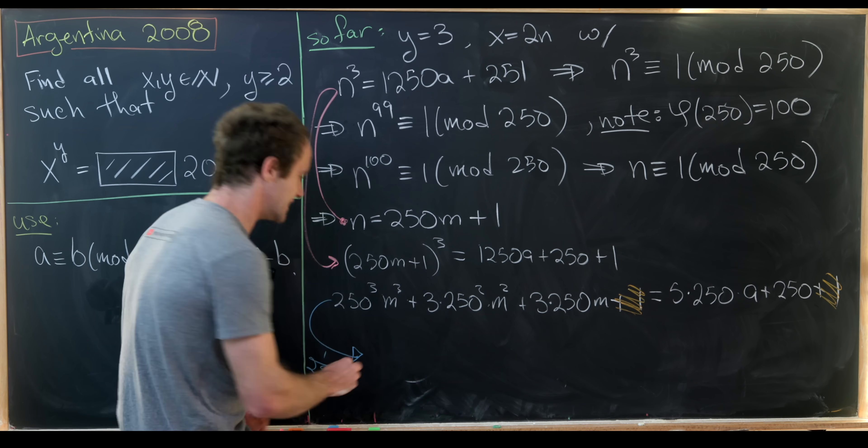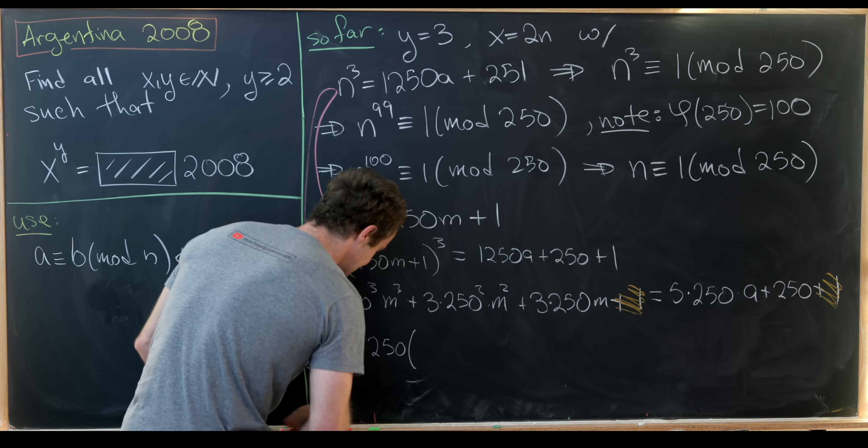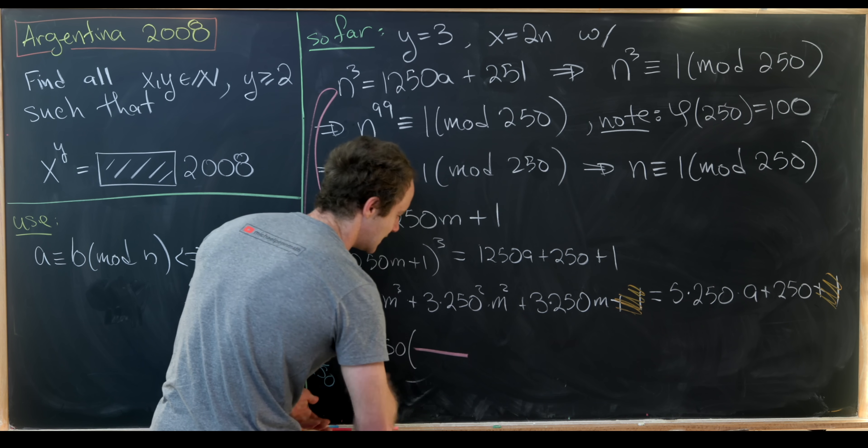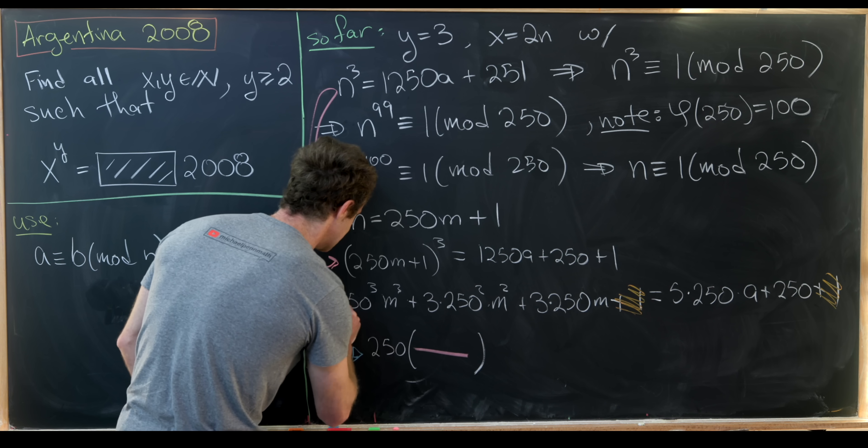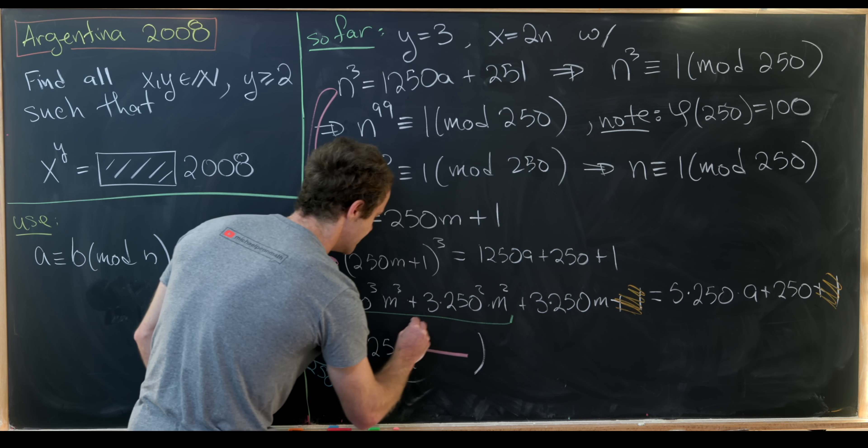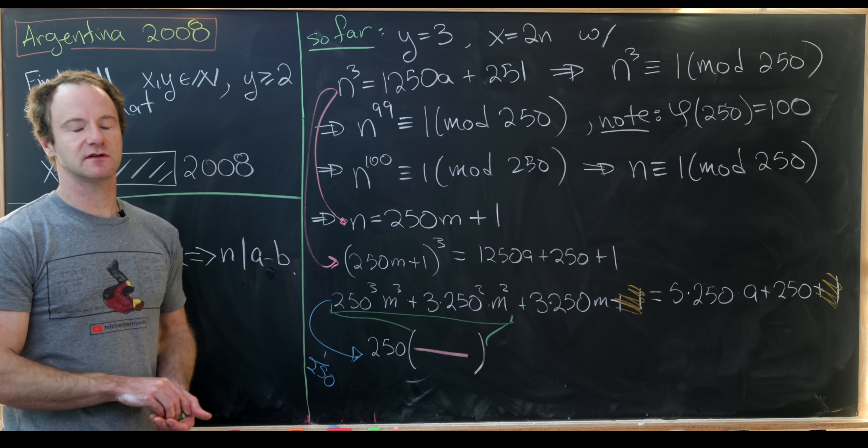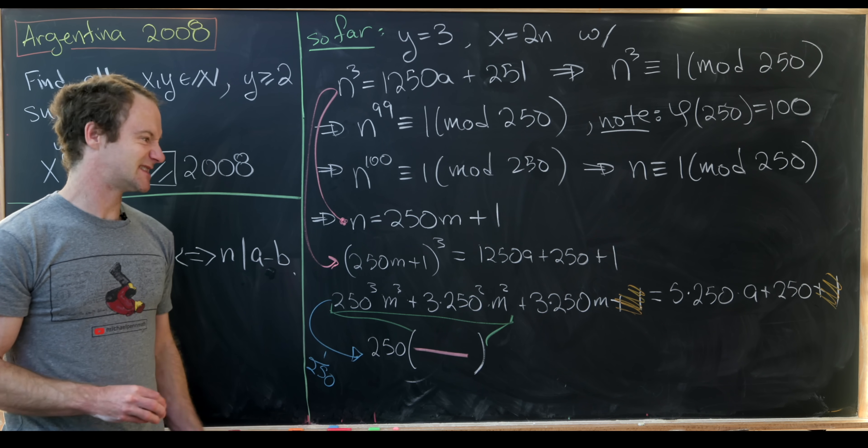And let's notice that we'll be left with 250 times a bunch of stuff. So I'll just put that as this pink line and that's condensing down from all of this.